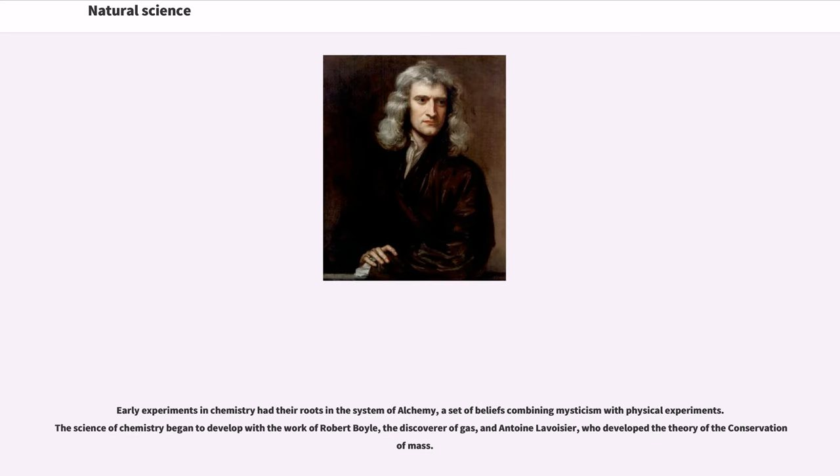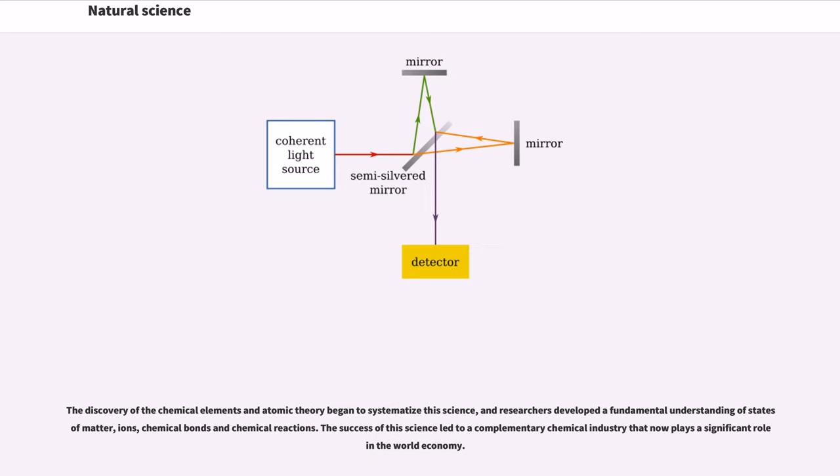Early experiments in chemistry had their roots in the system of alchemy, a set of beliefs combining mysticism with physical experiments. The science of chemistry began to develop with the work of Robert Boyle, the discoverer of gas, and Antoine Lavoisier, who developed the theory of the conservation of mass. The discovery of the chemical elements and atomic theory began to systematize this science, and researchers developed a fundamental understanding of states of matter, ions, chemical bonds and chemical reactions. The success of this science led to a complementary chemical industry that now plays a significant role in the world economy.